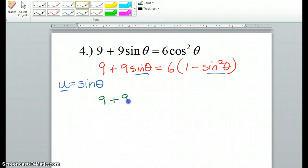So we have 9 plus 9u, because we're replacing sine theta with u. 6 times 1, oops, 1 minus u squared. Okay, so instead of just putting sine, we have sine squared, so you have to make it u squared. Alright, so now we're going to want to distribute. So we have 9 plus 9u equals 6 minus 6u squared. So I just distributed this 6 through there.